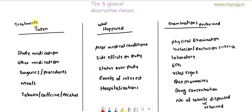You can easily remember the three classes by recalling these three phrases: what are the treatments taken, what happened to the subject, and what are the examinations performed on the subject. SDTM broadly classifies treatments taken as interventions, what happened to the subject as events, and examinations performed on the subject as findings. So the three general observation classes are interventions, events, and findings.